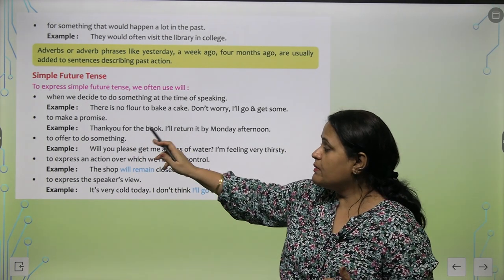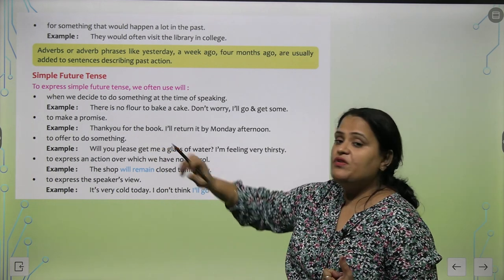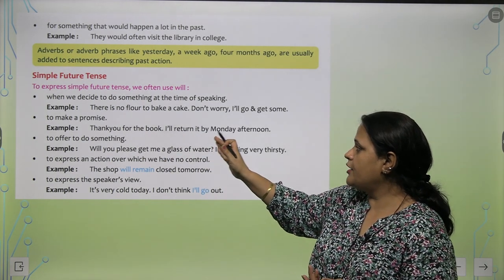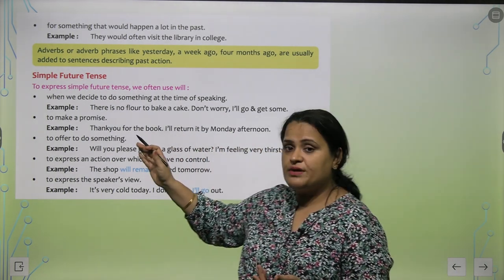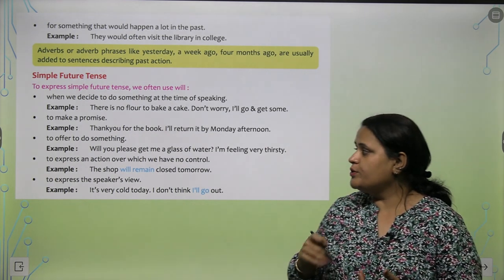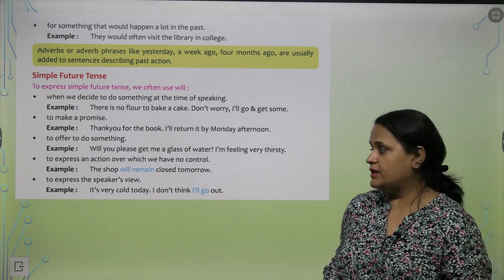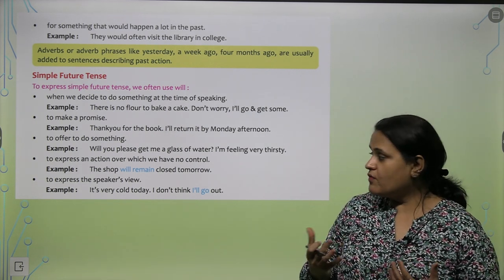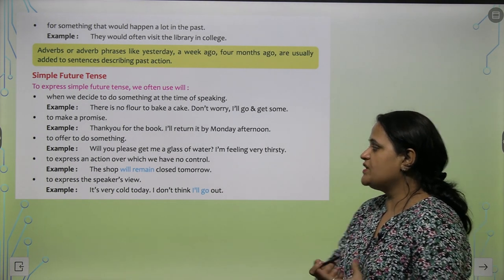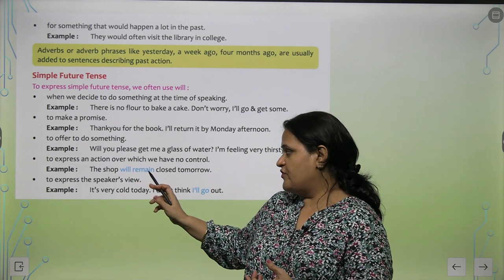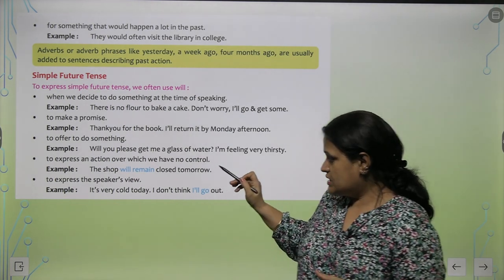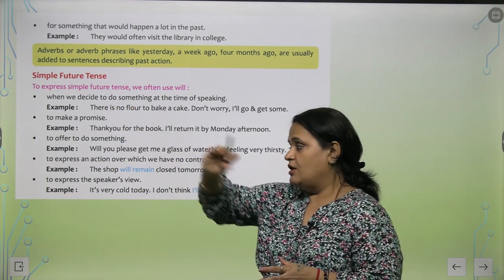Jab hum koi promise karte hai — 'I will try my level best. I will work hard. Thank you for the book, I will return it by Monday afternoon.' We are making a promise, so hum har promise karte hai future tense mein. To offer to do something — jab hum kisi ko kuch offer karte hai — jaise ke, 'Will you please get me a glass of water?' Aur to express an action over which we have no control — jaise ke, 'The shop will remain closed tomorrow.' Kal shop band rahegi, ispe koi control nahi hai. This type of sentence comes in the category of simple future.